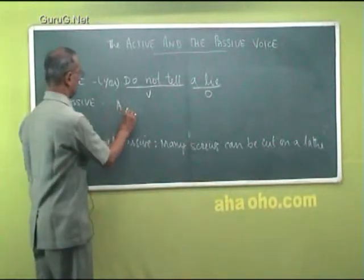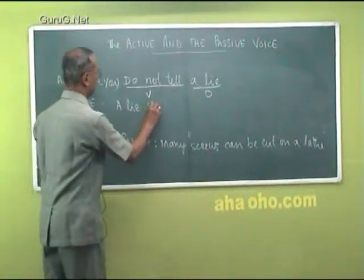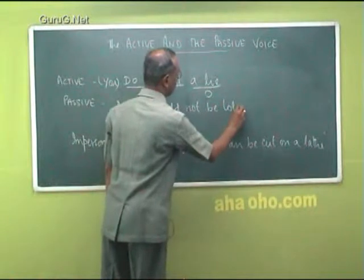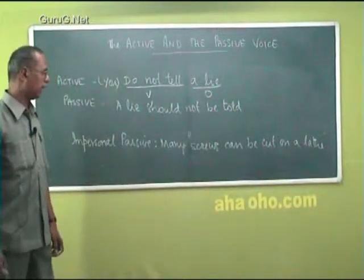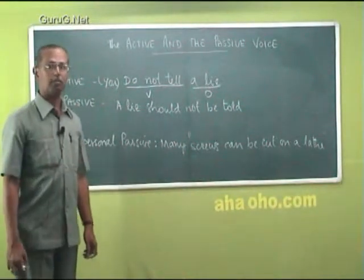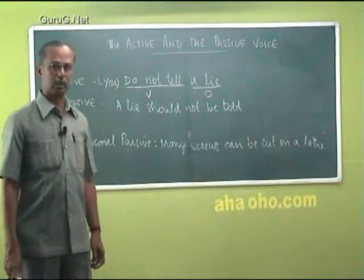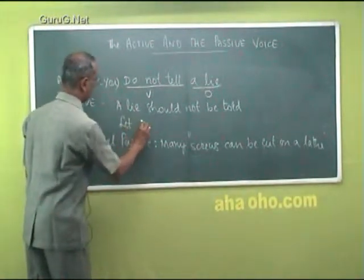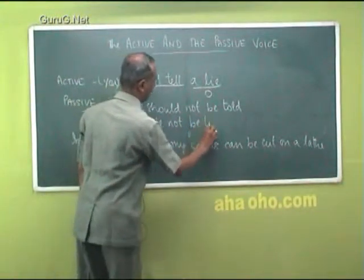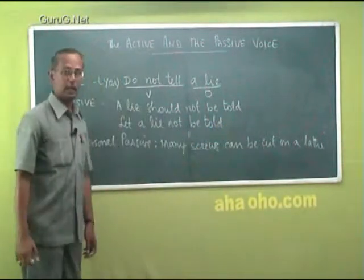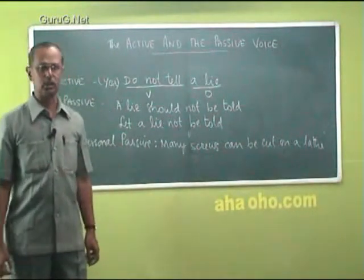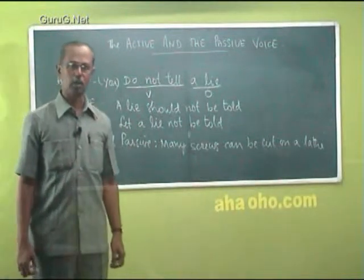Therefore the answer will be 'a lie should not be told.' Another method of writing this passive construction is 'let a lie not be told.' That is how the imperative sentences can also be converted from the active to the passive form.